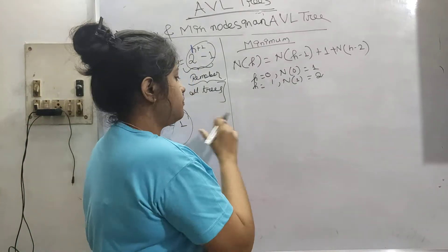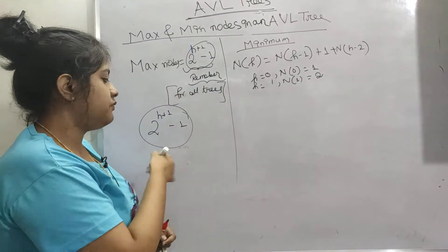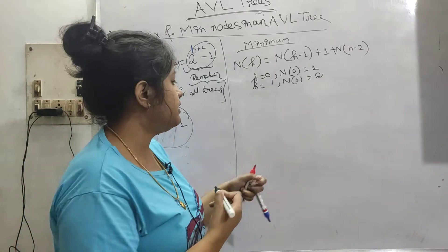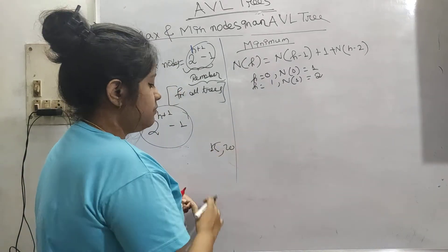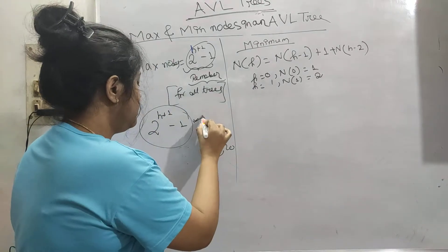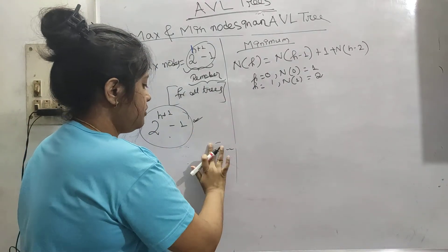Because see, if in a question there are 4, 5 options, with help of h you can easily find it out. But if it is given like 15, 20 like this, it will be hectic to find. That is why here formula is very important.